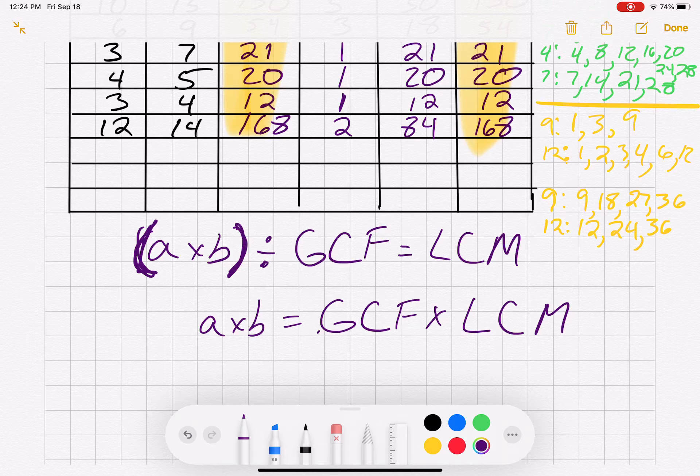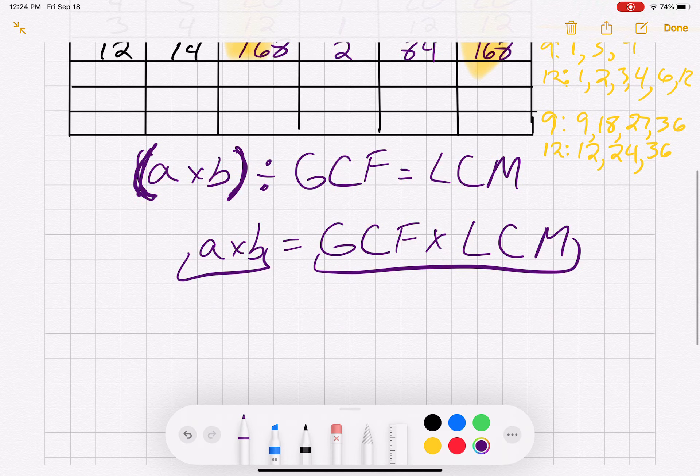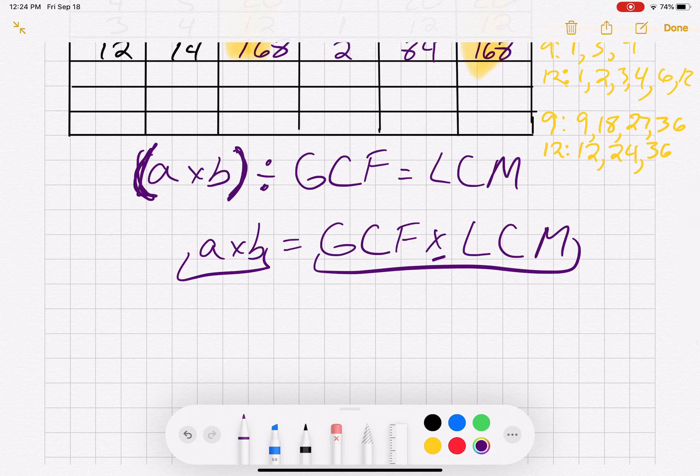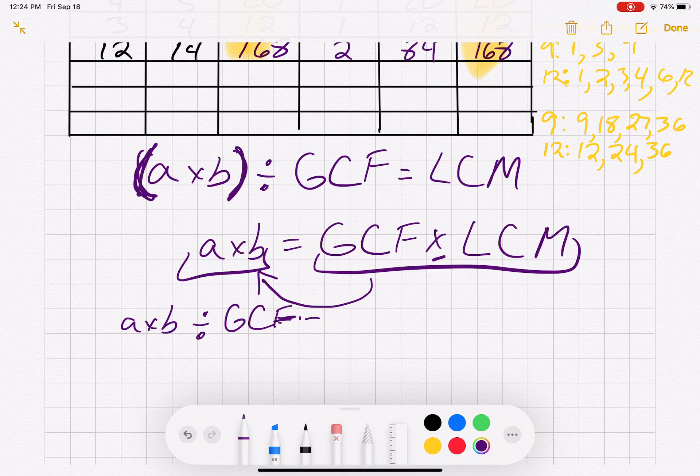So if these are equal to each other, if I move the equation around, right, so this is multiplication, and if I am going to get it over to this side, we're going to talk about more of this when we hit algebra, I'm going to divide. You have to divide greatest common factor here, and then we'll end up with the least common multiple here. So that's just two different ways of looking at it.